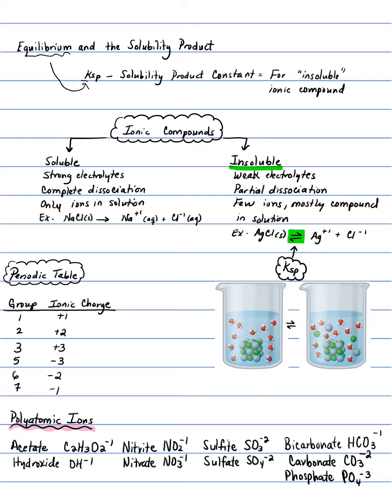Ionic compounds can be soluble or insoluble. When you have soluble ionic compounds, they're classified as strong electrolytes because they dissociate entirely in water, giving you only ions. An example of a strong electrolyte is sodium chloride. When you add that solid into water, the ionic bond holding together the sodium ion and the chloride ion breaks apart, dissolving in water. When you have insoluble ionic compounds, they are weak electrolytes because they don't dissociate entirely — they dissociate partially, giving you just a few ions and mostly the solid in solution.